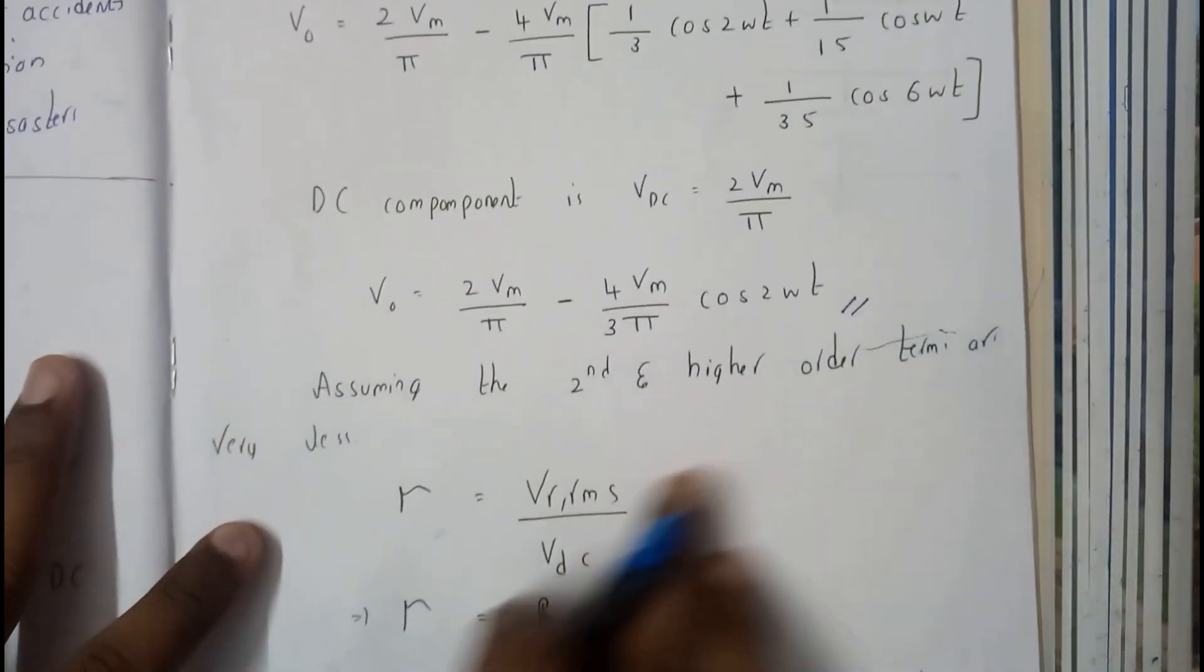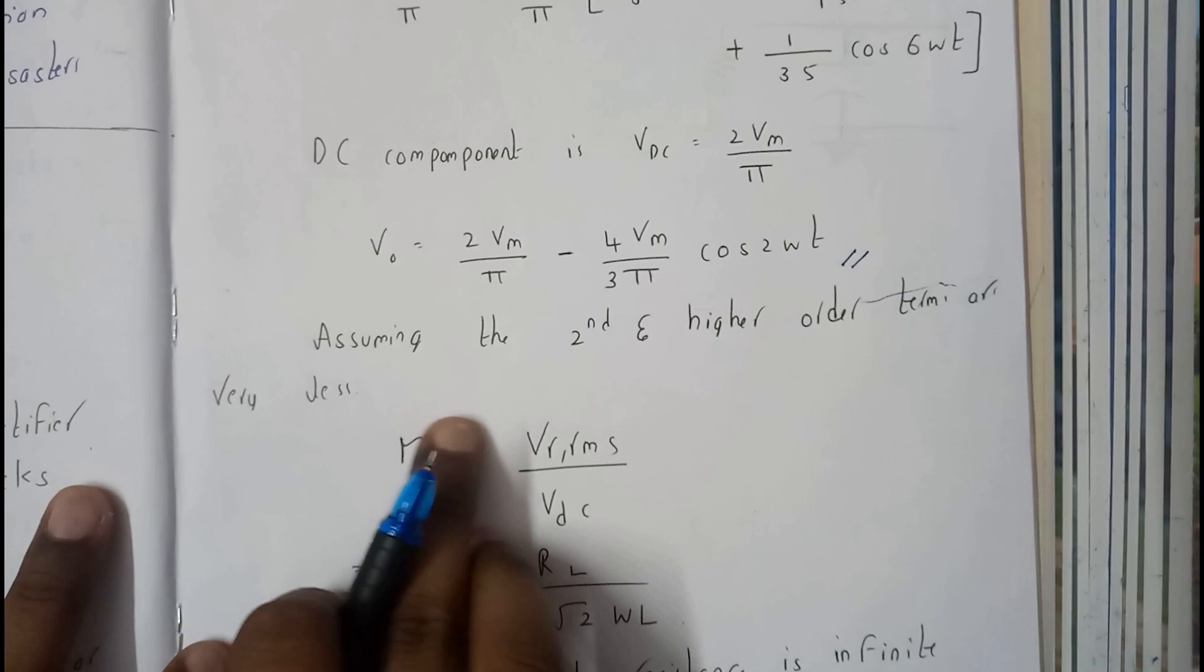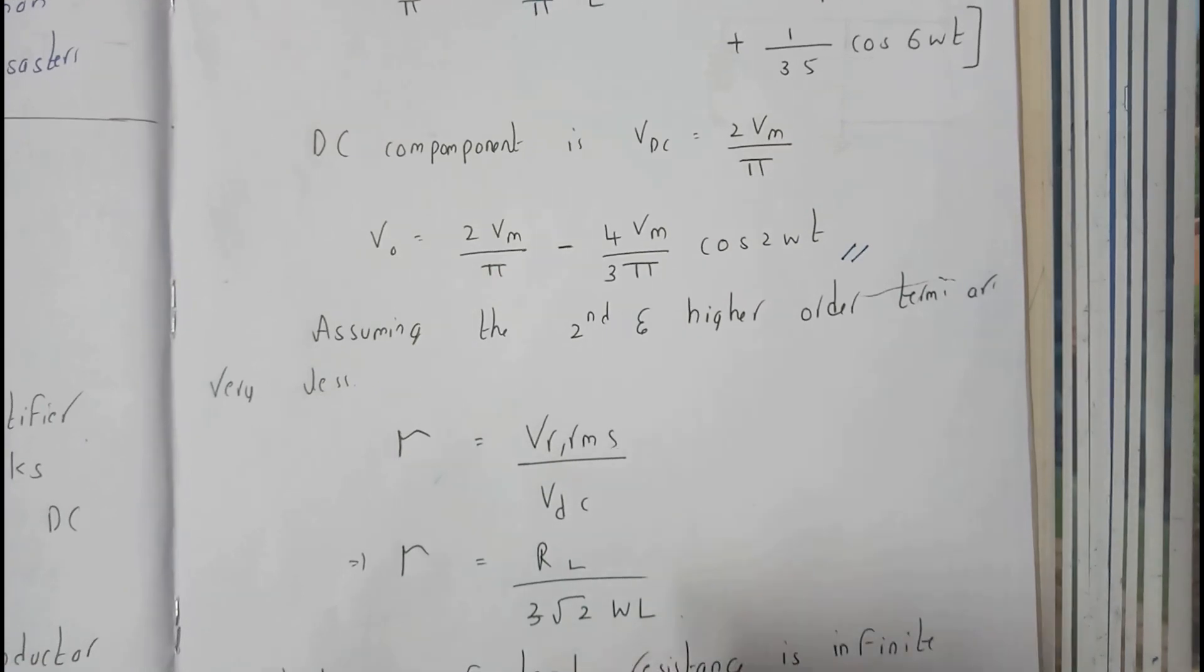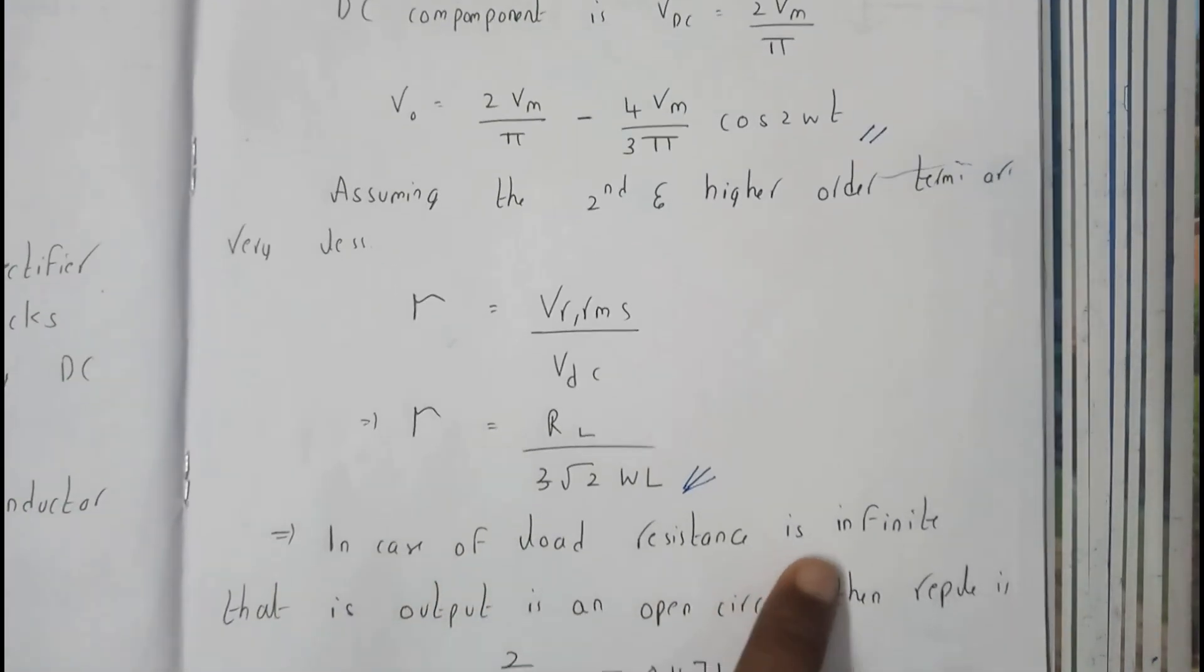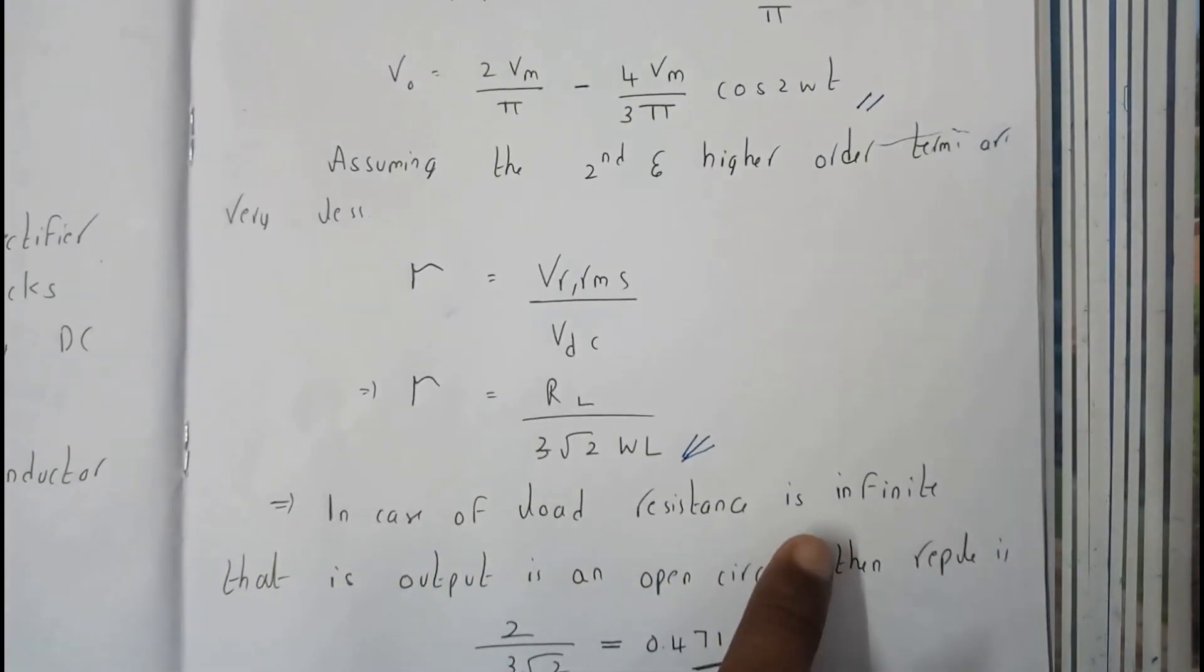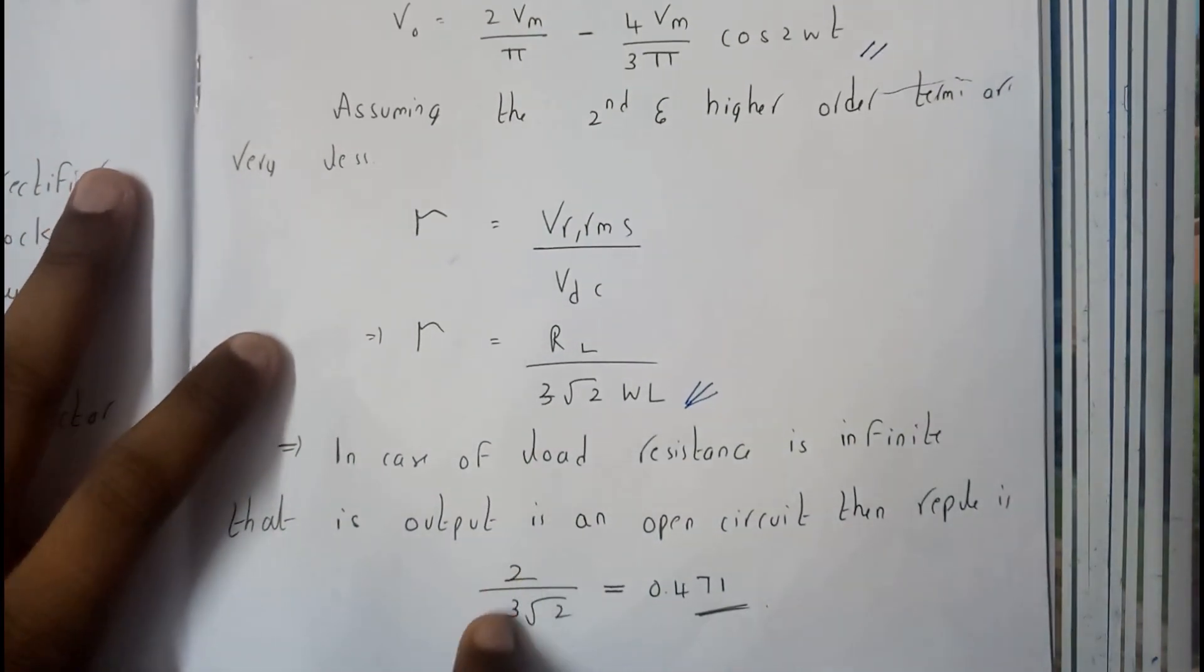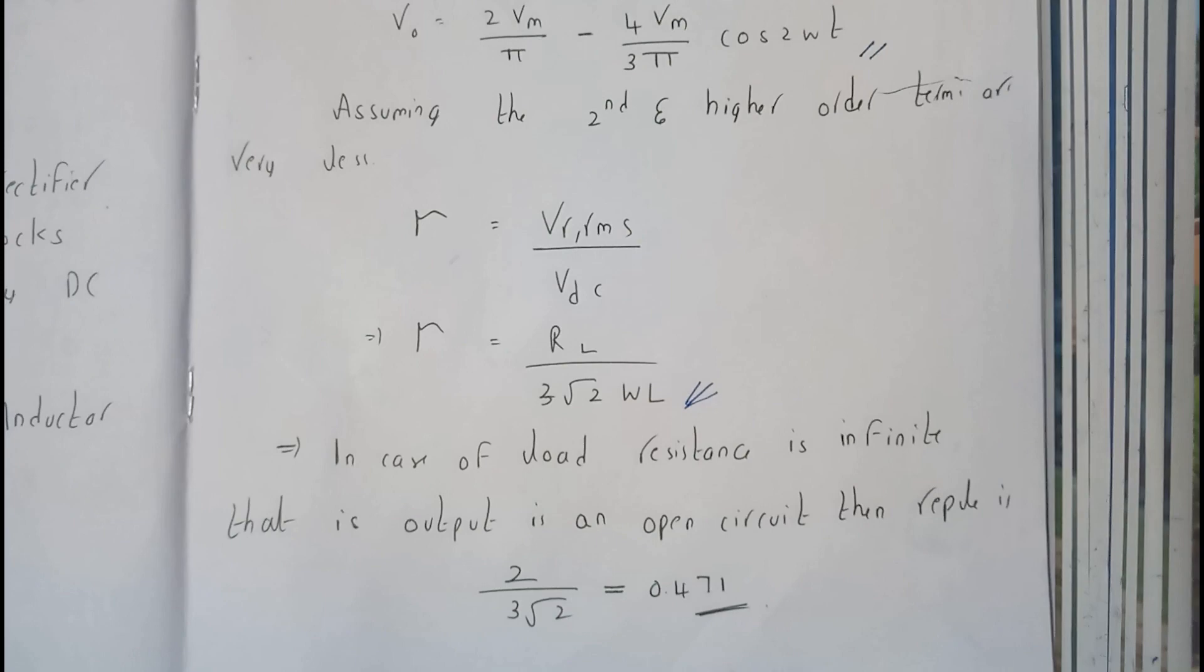We know that ripple factor equals VRMS by VDC. I have directly written the answer as I don't have clarity on the full proof. In case the load resistance is infinity, then the answer is 2 by 3 root 2, which equals 0.471.